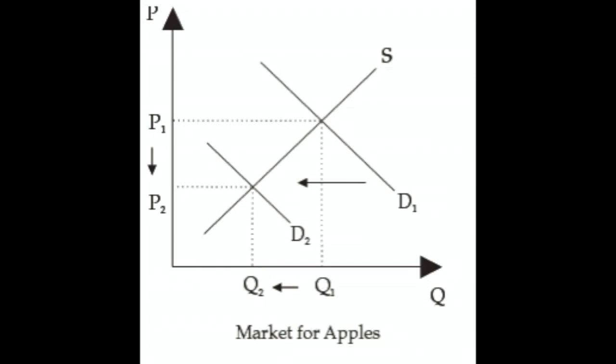Thinking about the demand curve for apples: holding the price of apples constant, people are going to buy less. That's why the demand curve for apples shifts left — we're not moving along the apples demand curve, the whole curve itself is shifting because the price of oranges went down and that causes people to buy fewer apples. For every hypothetical price of apples, the quantity people want to buy is now lower than it was before the hypothetical good weather that caused oranges to get cheaper.